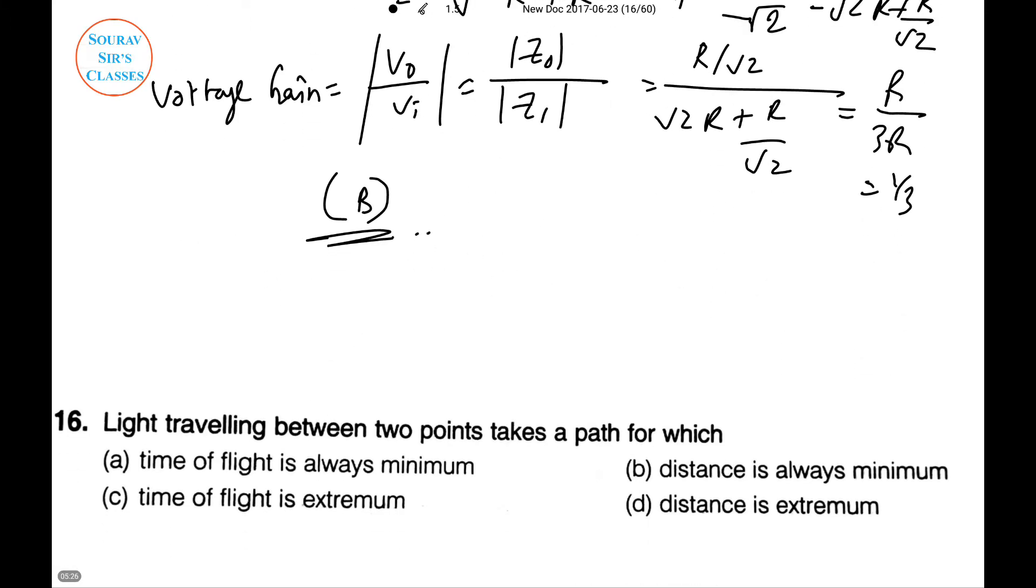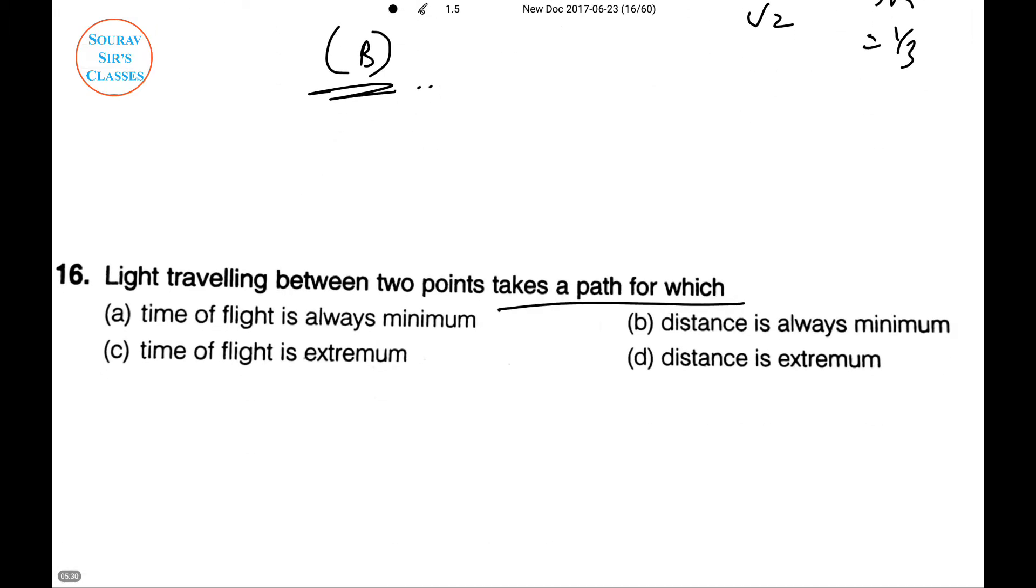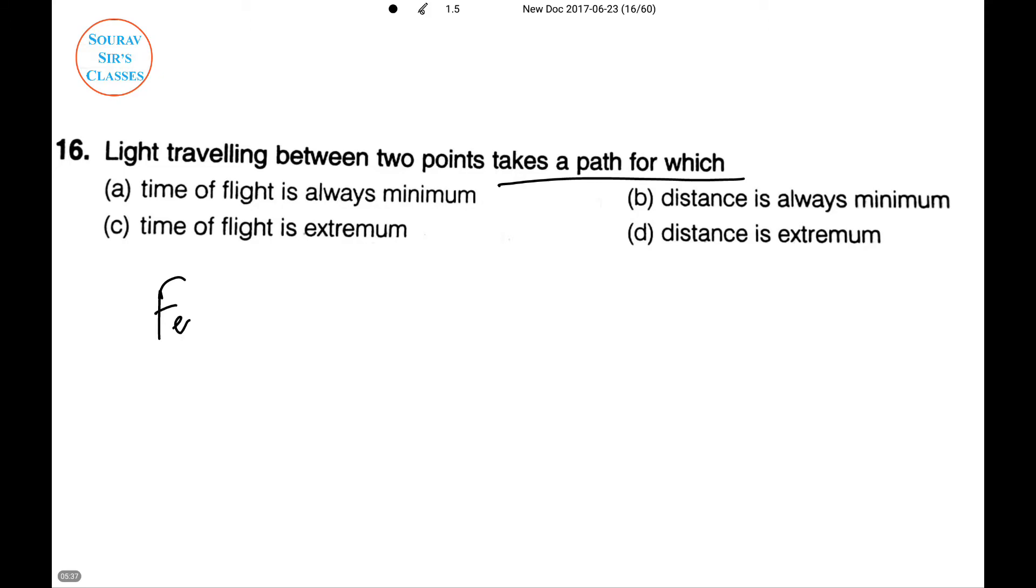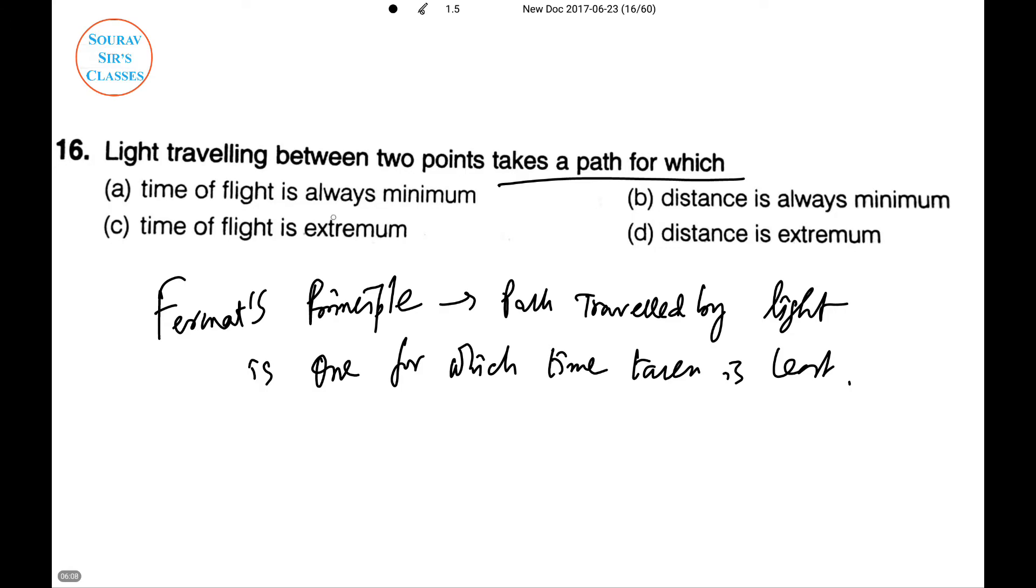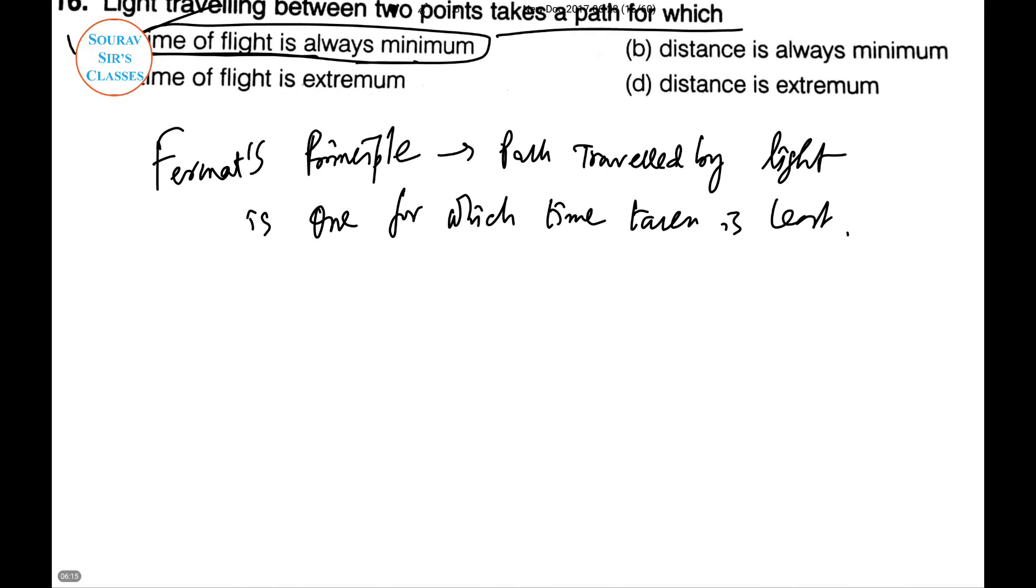Question 16: Light traveling between two points takes a path for which... which of them is correct? Here we are talking about Fermat's principle. Fermat's principle states that the path traveled by light is one for which time taken is least. So time of flight is always minimum, and option (a) is the answer.